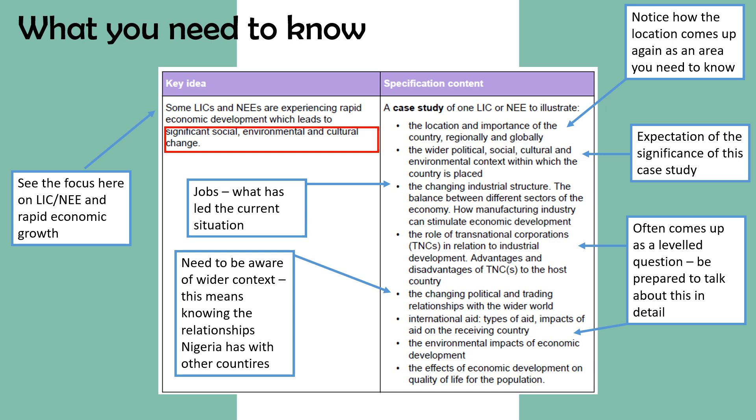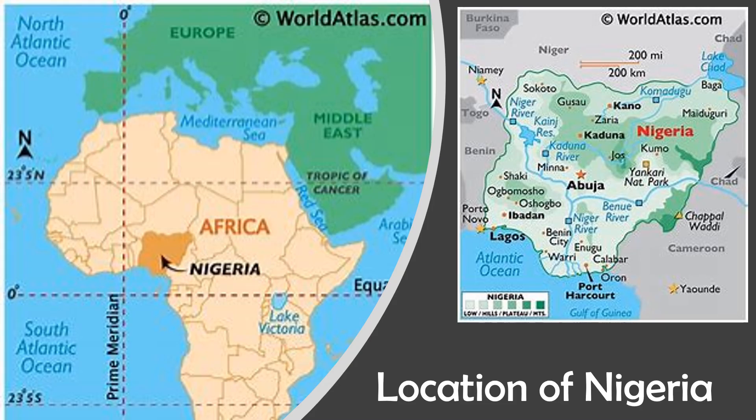Nigeria is located on the African continent — remember Africa is a continent — on the western coastal area. It borders Benin, Niger, Chad and Cameroon, and sits on the Gulf of Guinea off the South Atlantic Ocean. If you need a reference point, it sits roughly due south of the UK, about 3,100 miles away and one hour ahead. That sort of knowledge is helpful and counts as subject-specific geographical knowledge.